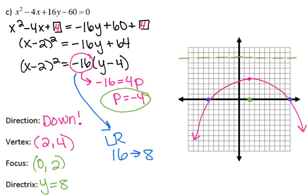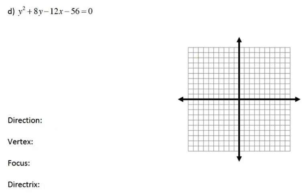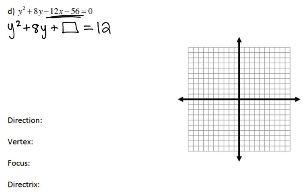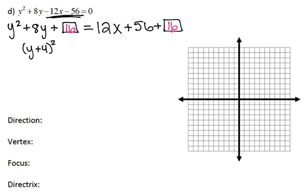So the parabolas we've had so far have been opening up or down. Now let's look at some that are going to open to the left or to the right. If you'll notice, y is being squared now. I do need to get this in the correct form, so I'll complete the square. I have y² + 8y plus a box. I move the other two terms to the other side, changing signs: 12x plus 56. I take half of 8 and square it — half of 8 is 4, and 4 squared is 16 — so that goes in the box on both sides. I factor the left side: two numbers that multiply to 16 and add to 8 are 4 and 4, giving (y + 4)². On the right I combine: 12x plus 72. I factor out 12, and my equation is (y + 4)² = 12(x + 6).